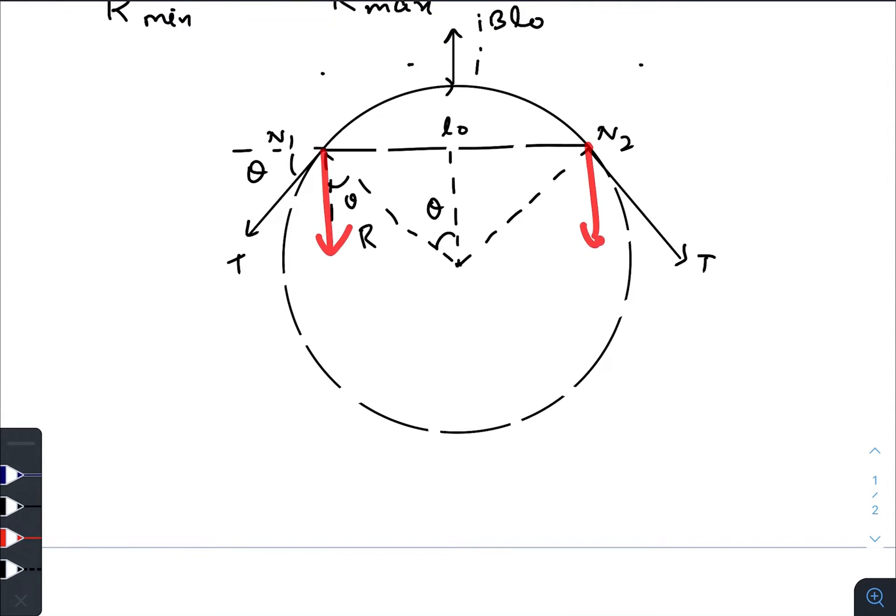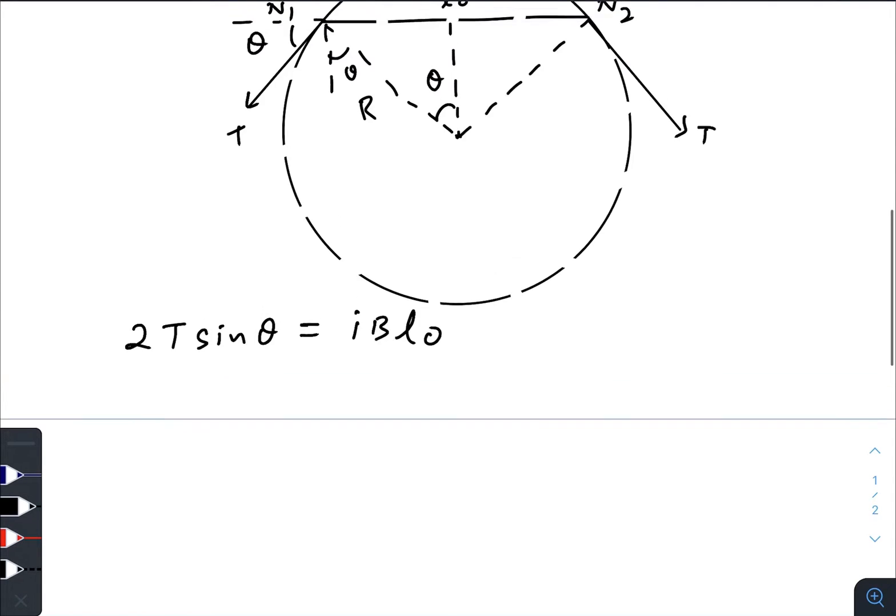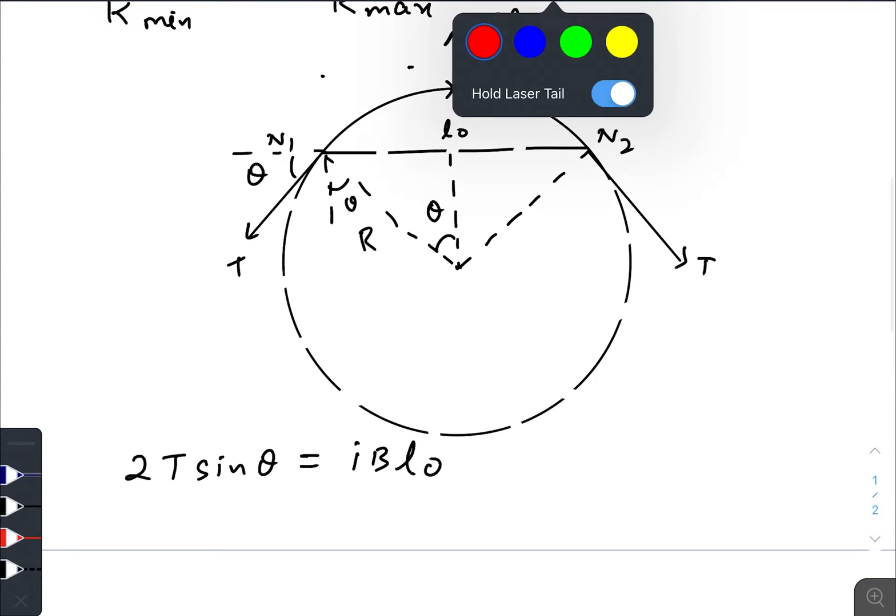We could write T sin θ plus T sin θ that gives you 2T sin θ which is balanced by IBl₀. Now if you check properly that net force at this point is zero.